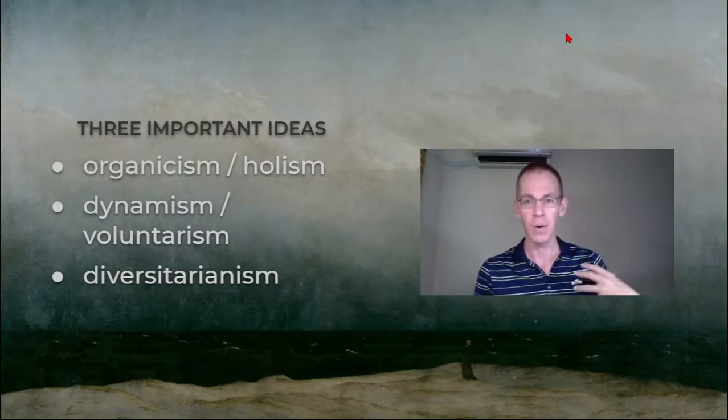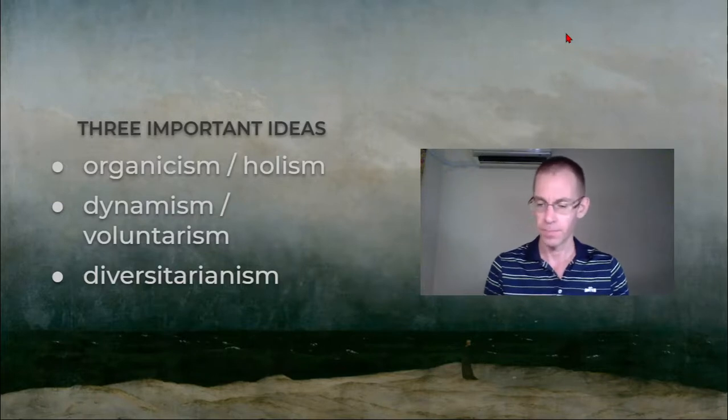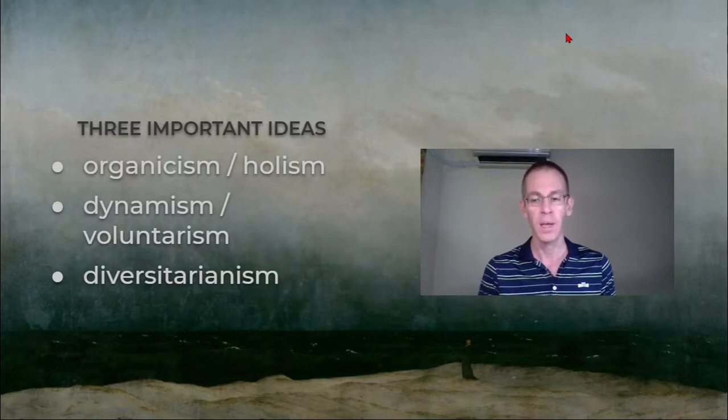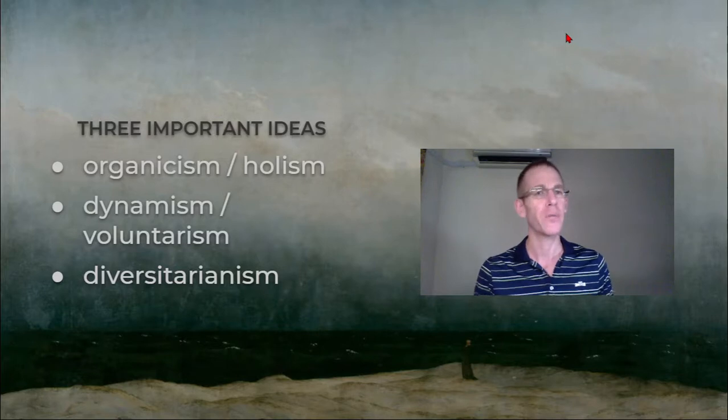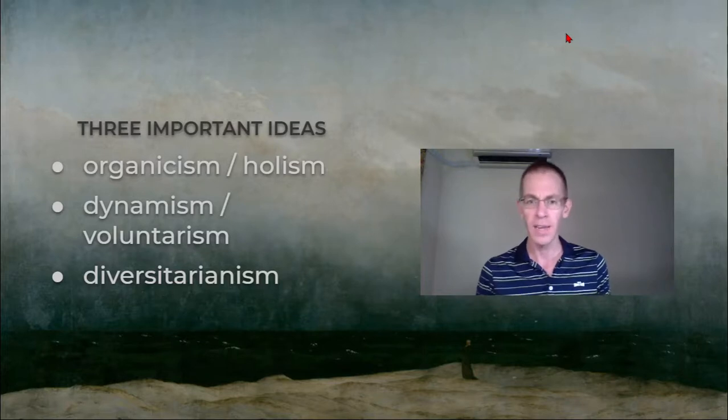Then dynamism or voluntarism. This is about the importance of process, striving, becoming, as opposed to static being. It's a dislike of finitude. Endless struggle was an important concept for the Jena romantics, actually for many later romantics as well.